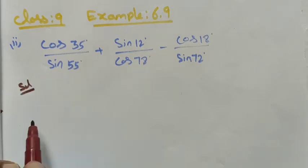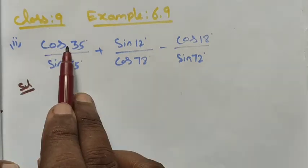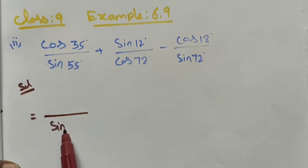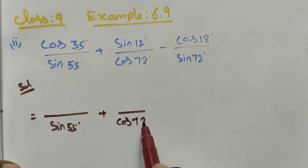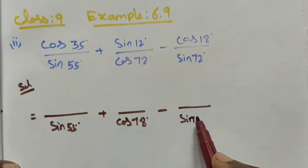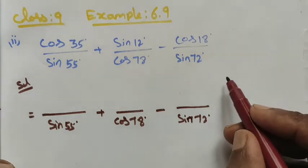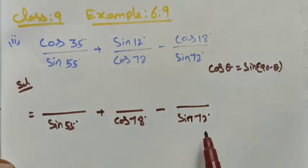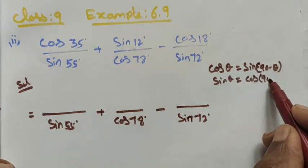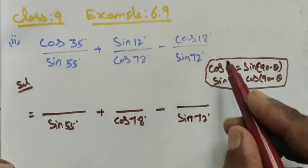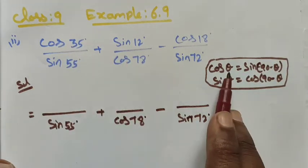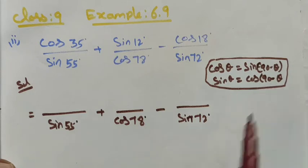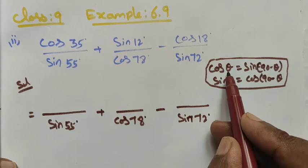By applying the complementary angles. In the complementary angles I will change the numerator and denominator. The complementary angles: cos theta is equal to sin 90 minus theta and sin theta is equal to cos 90 minus theta. This is sin cos, cos sin, sin 90 minus theta. Sin theta is equal to cos 90 minus theta.